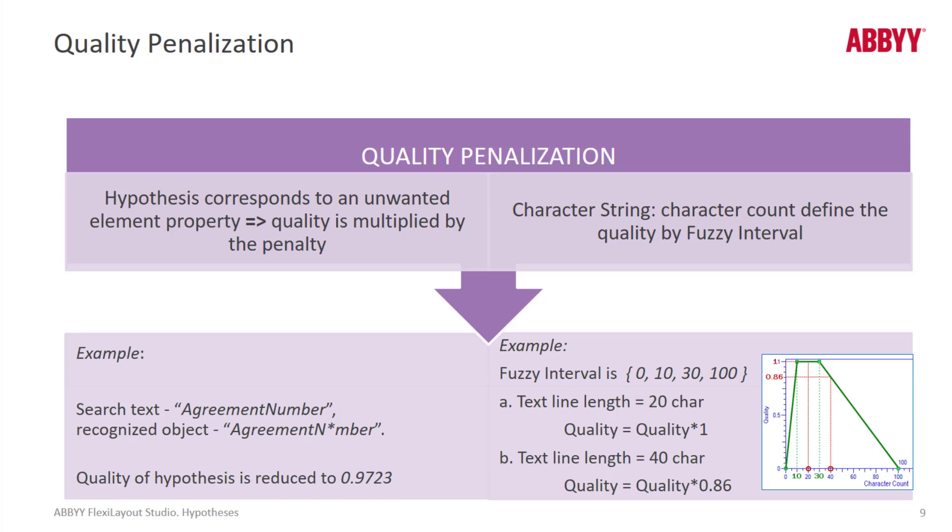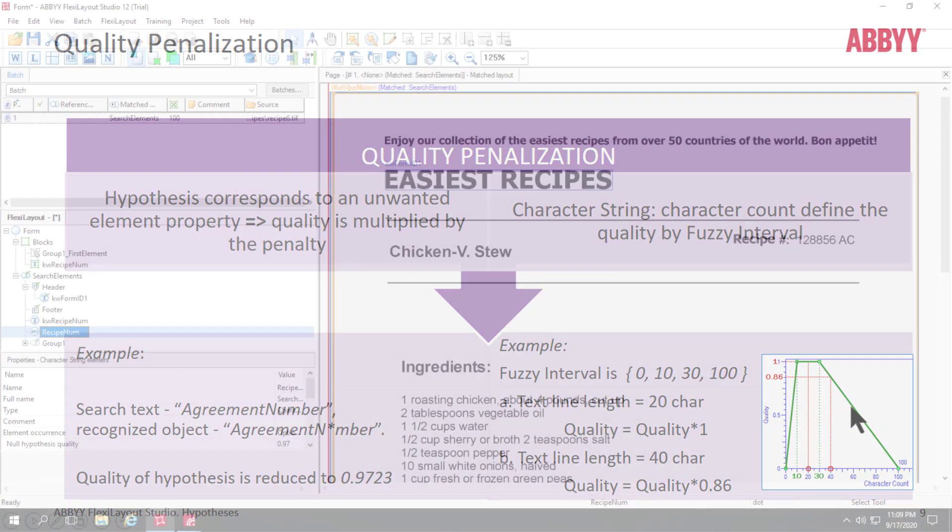And for character string elements, we can specify a fuzzy interval. For instance, here, if we're looking for characters that are between 10 and 30 characters long, and we find such strings, the corresponding quality level will be 1. But if we find a string that is 40 characters long, it will be penalized and have a quality of 0.86. And furthermore, it's not pictured here, but if we add a 60 character string, it too would have a lower quality. And you can just draw a straight line to see what that quality would be here.